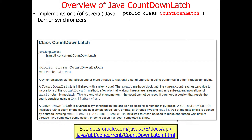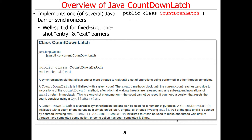The countdown latch is used for fixed-size — in other words, we know in advance how many parties or threads there are — one-shot entry and/or exit barriers. The key thing to remember is it's really one shot. Once you're done with its use as an entry or exit barrier, you have to recreate it if you want to reuse it. That's a little different from cyclic barrier, which just gets reset when everything reaches the end.